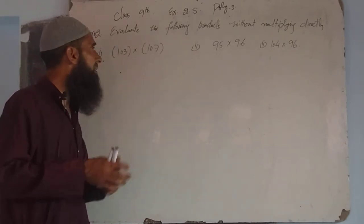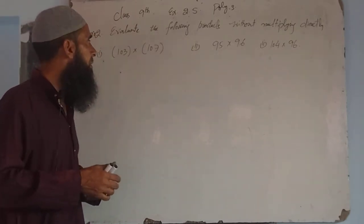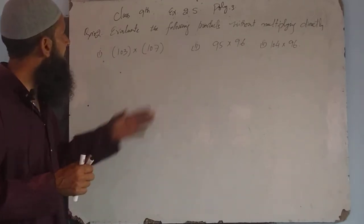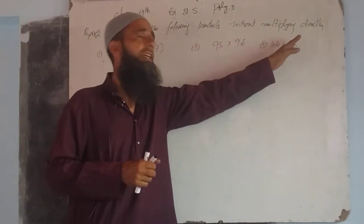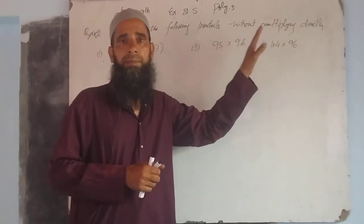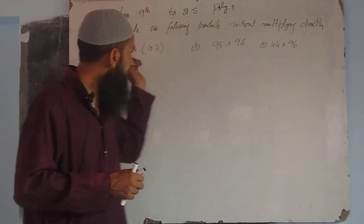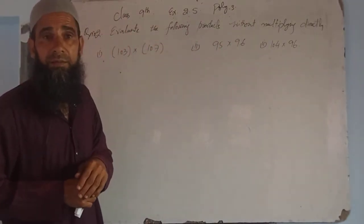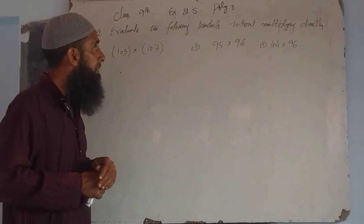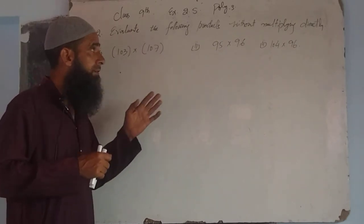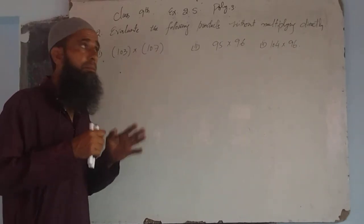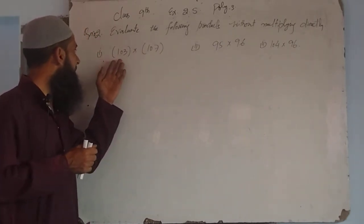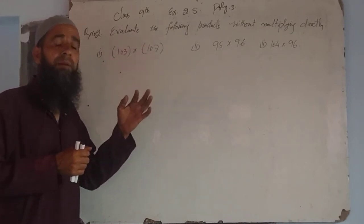Now we will discuss our question. We have to evaluate the following products without multiplying directly. Our first part is 103 into 107.